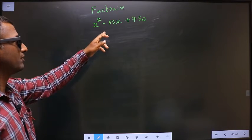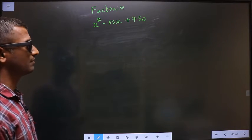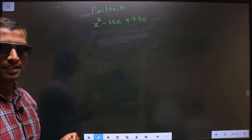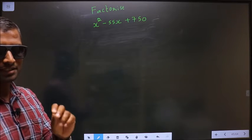Factorize x² - 55x + 750. To factorize any quadratic equation, step 1: